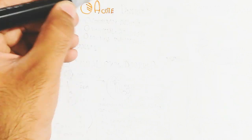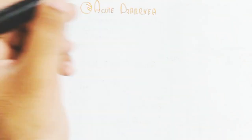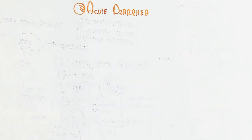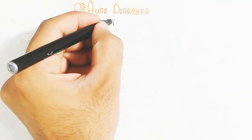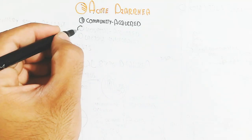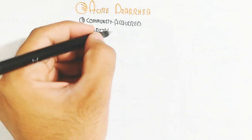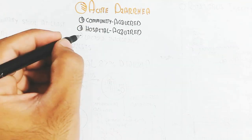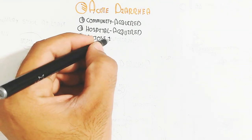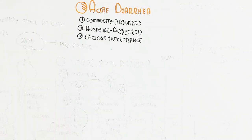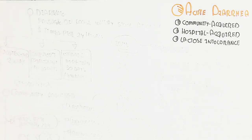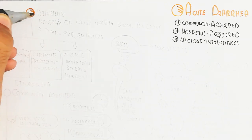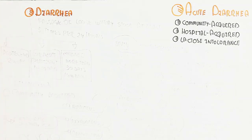Hello, assalamualaikum. In this video we will understand acute diarrhea. Diarrhea can be classified as community acquired diarrhea, hospital acquired diarrhea, or lactose intolerance diarrhea. But in this video we will understand the bacterial and viral diarrhea, which is basically community acquired diarrhea, in detail.